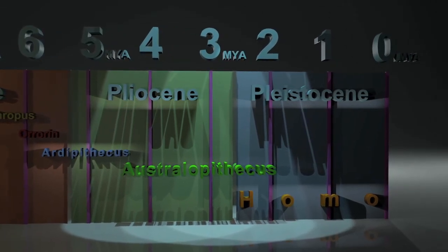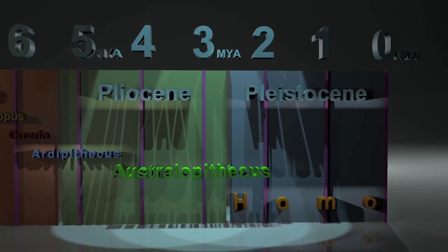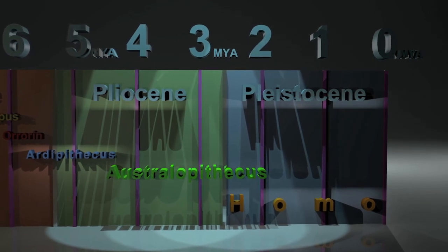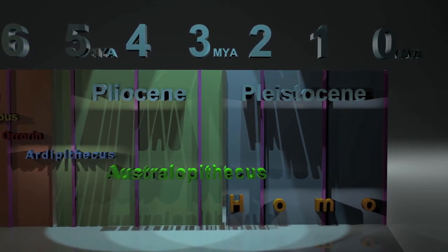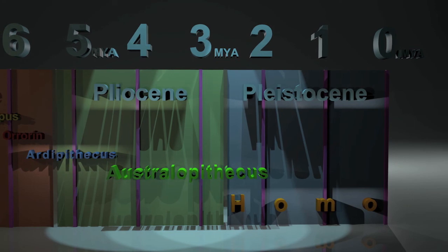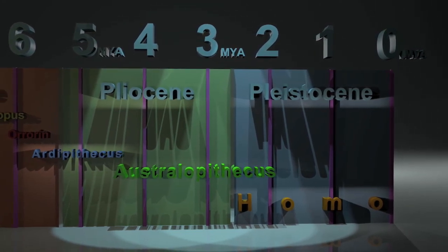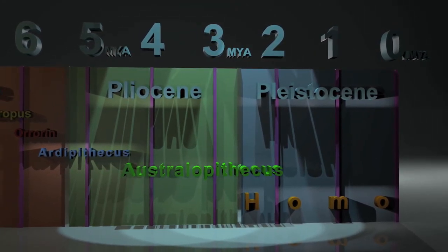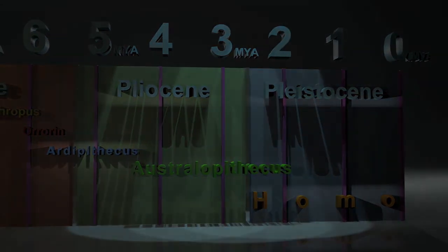We begin to encounter Australopithecus at around 4.2 million years in the past. The Australopithecines are a very important relation on the family tree Homo. Let's begin our look at the genus Australopithecus on an October Saturday in 1924.